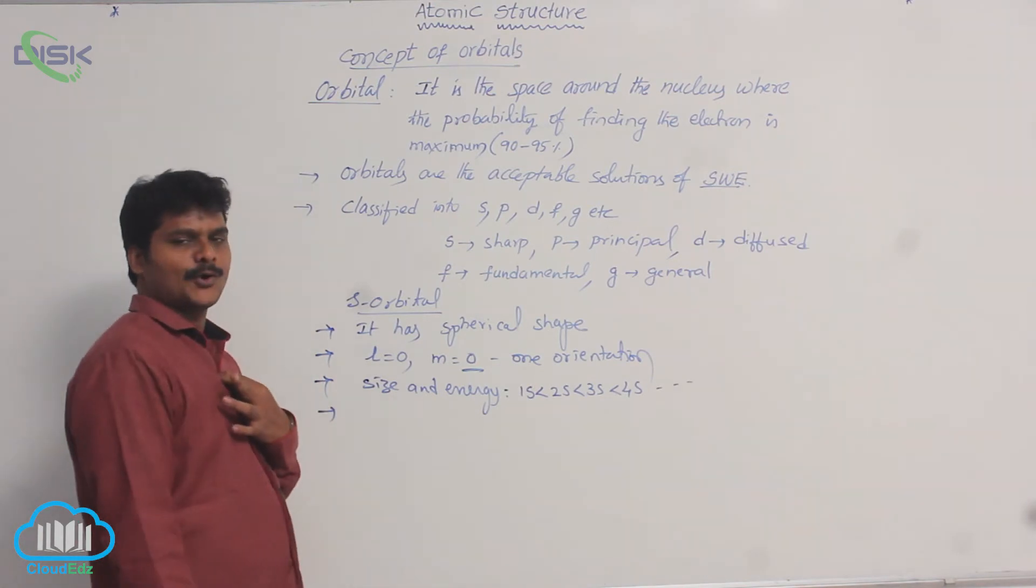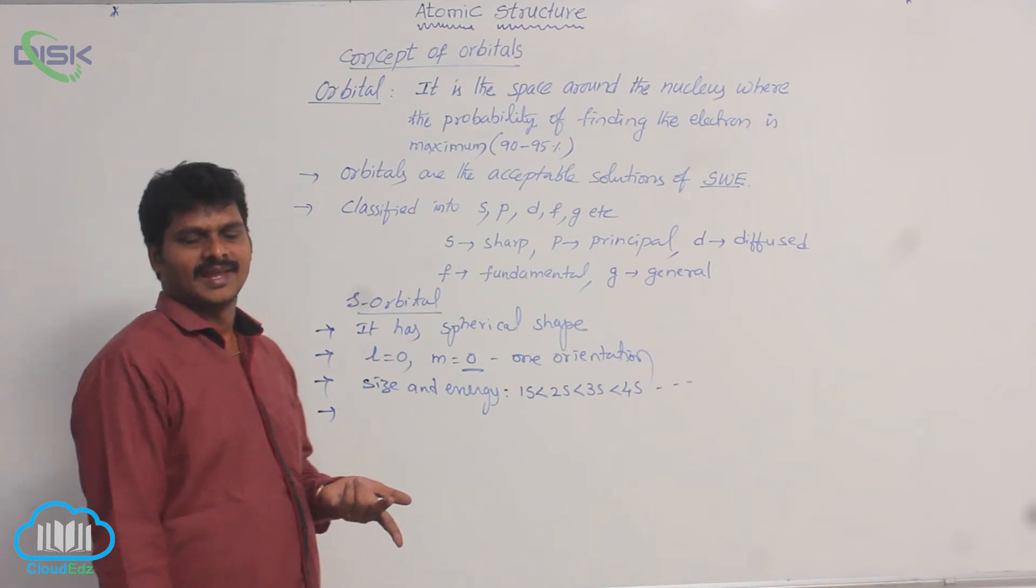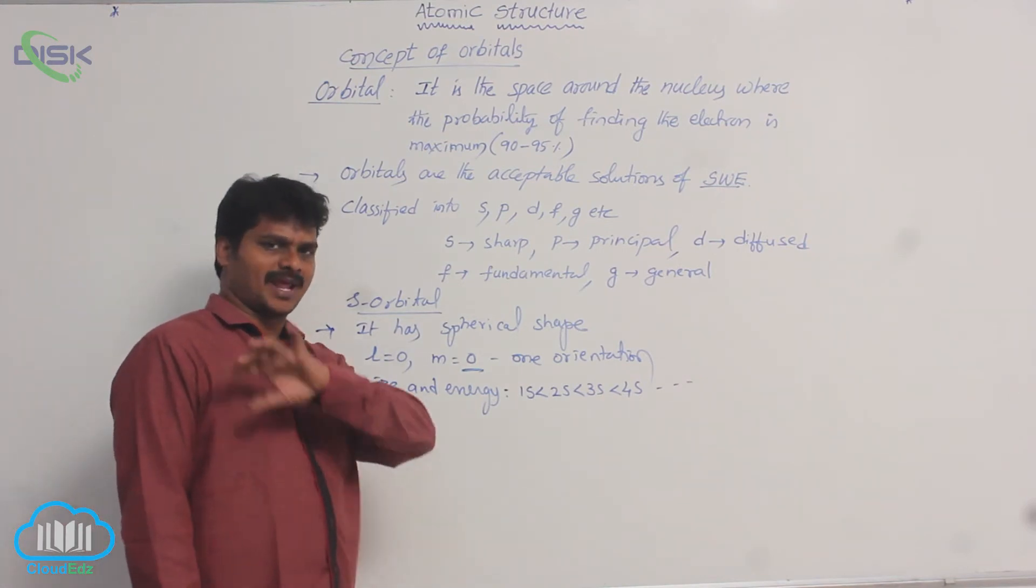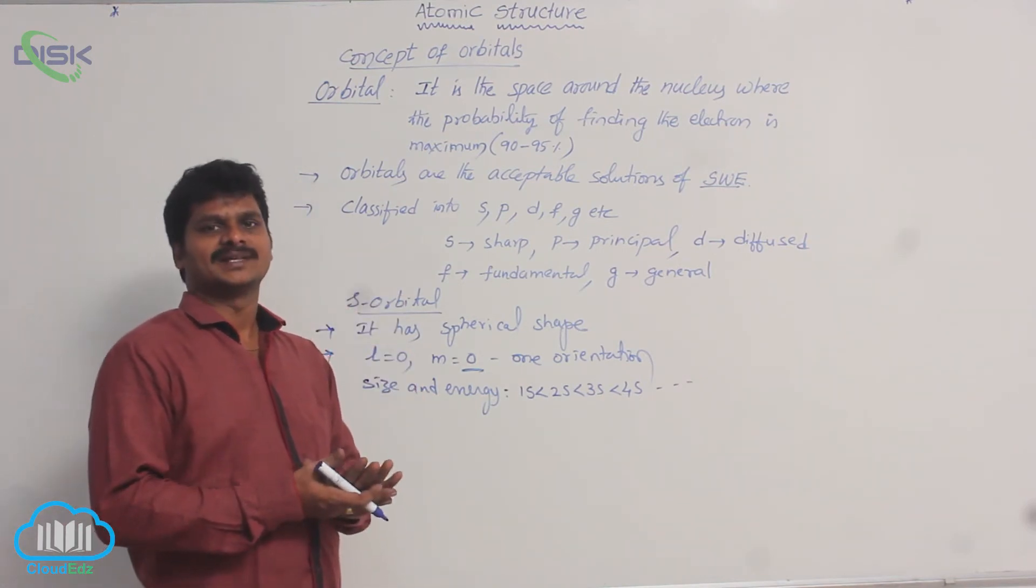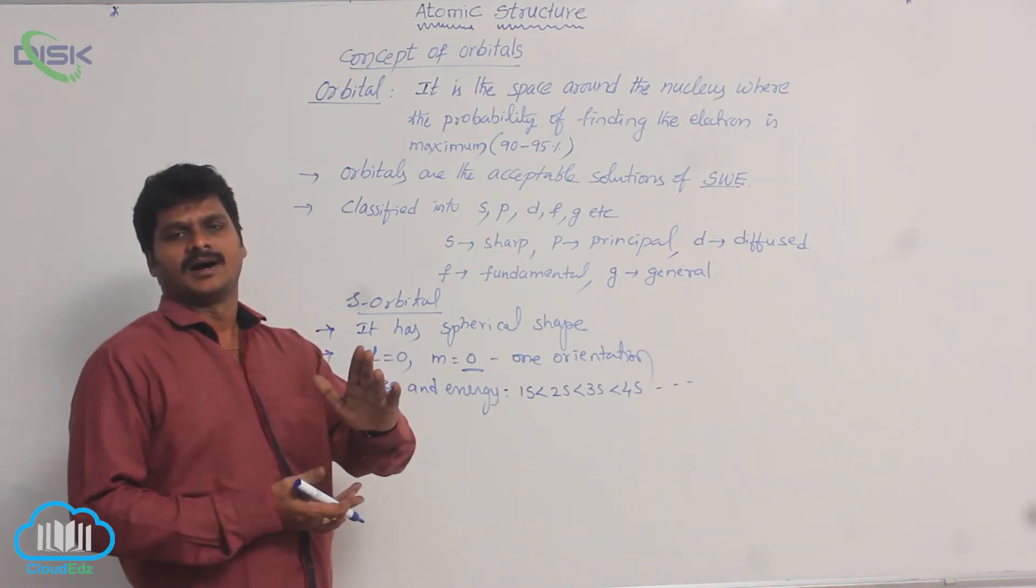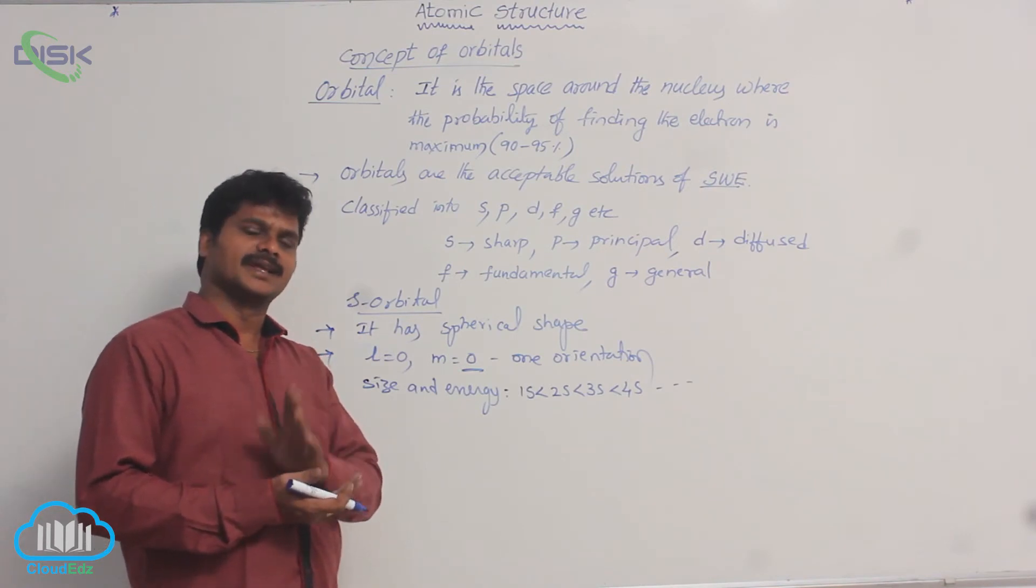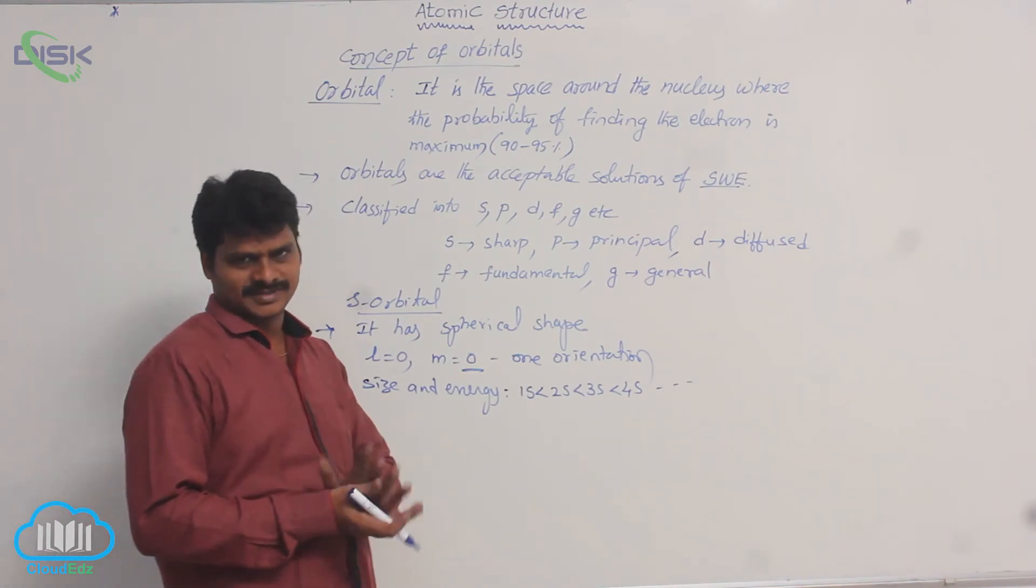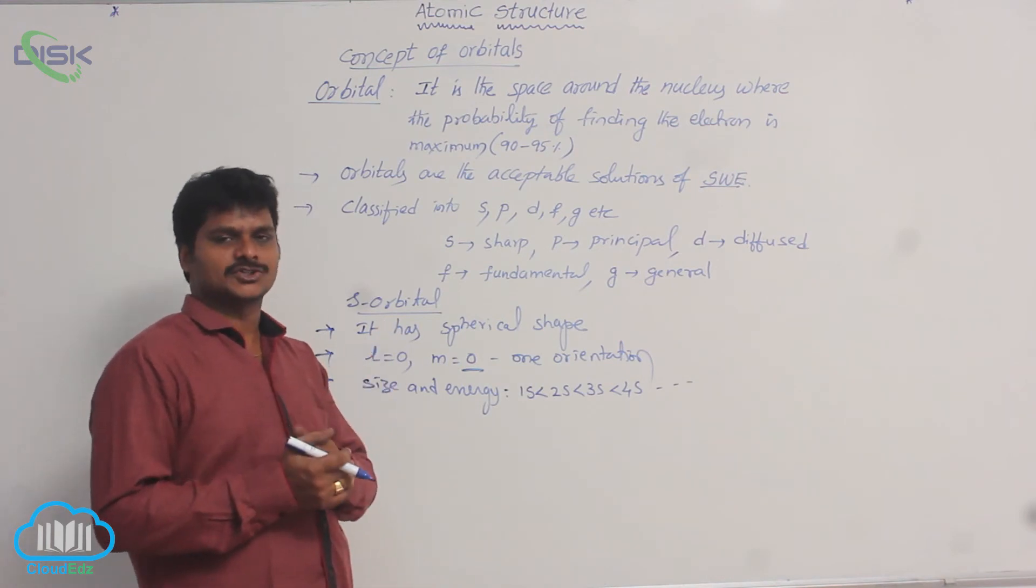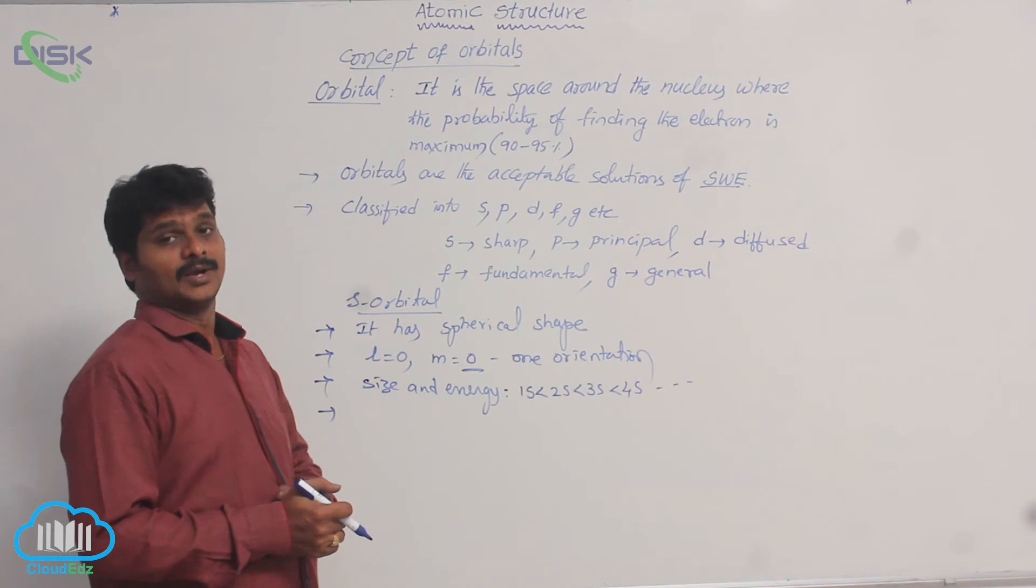So similarly, S orbital has nodal planes. Nodal plane means a region, a plane, which passes through the orbital without touching any electron density. That means, the plane in which the probability of finding electron is 0 is said to be nodal plane.